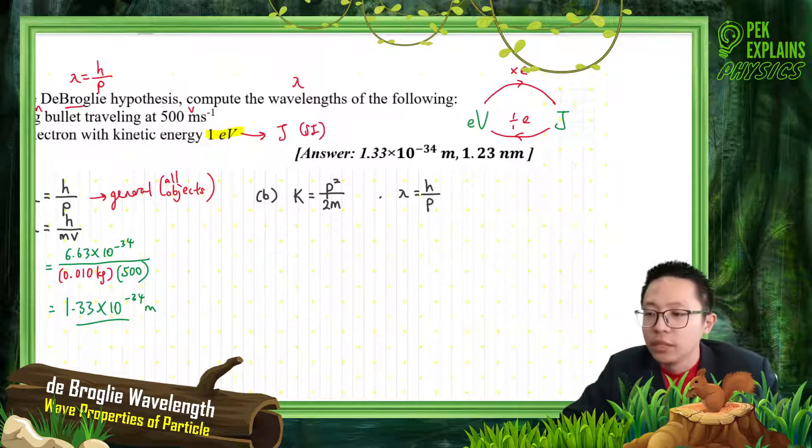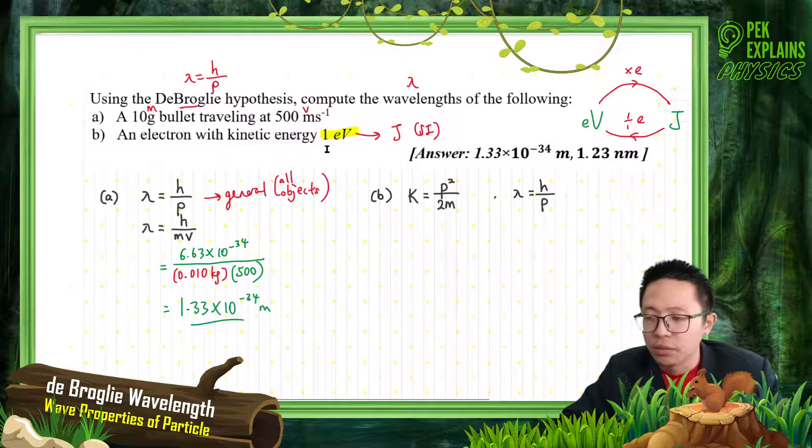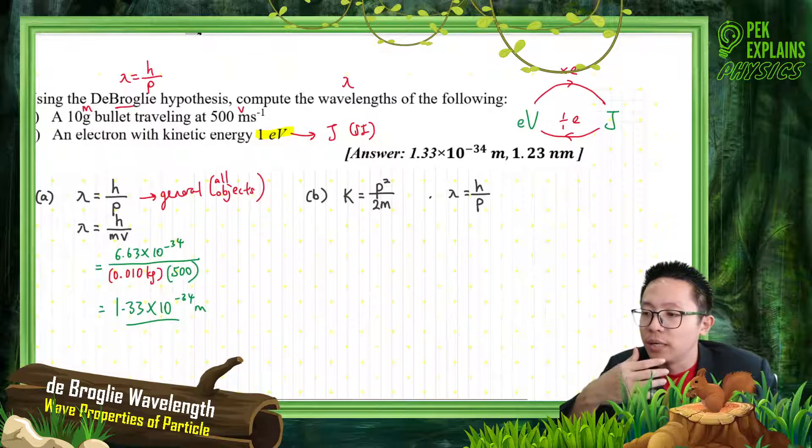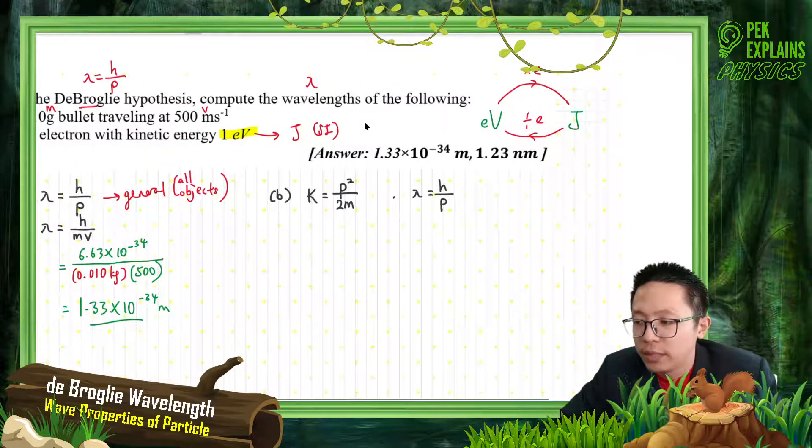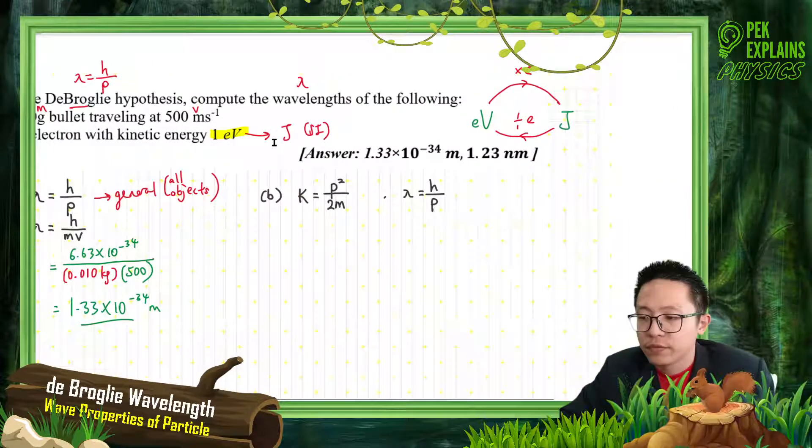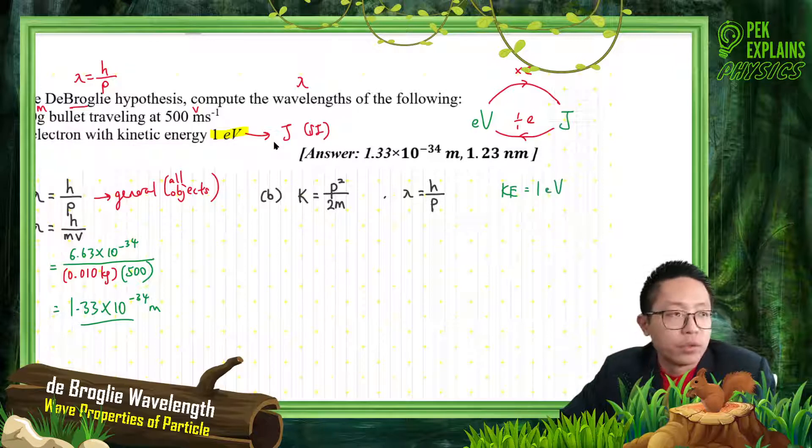Before we substitute into the formula, never, never, never substitute electron volt. Always change to joules first. Let's find out this kinetic energy, which is one electron volt.